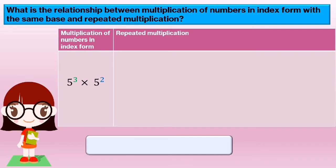What is the relationship between multiplication of numbers in index form with the same base and repeated multiplication? Let us look at the multiplication of numbers in index form below: 5 power of 3 times 5 power of 2.